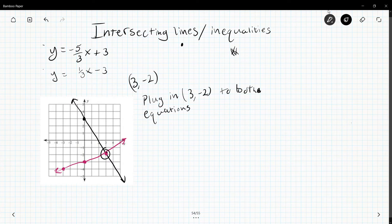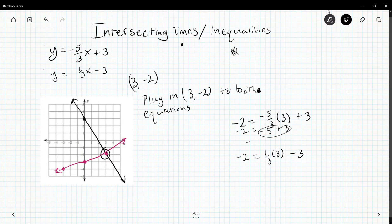So just to show that off, I have negative two equals negative five-thirds times three plus three. And negative two equals one-third times three minus three. So when I do this, I get negative two equals negative five-thirds times three is negative five plus three. And negative five equals negative five, or sorry, negative two equals negative five plus three. And this is in fact negative two. So negative two equals negative two. And that works. So this is how I check my work to make sure my coordinate is correct.